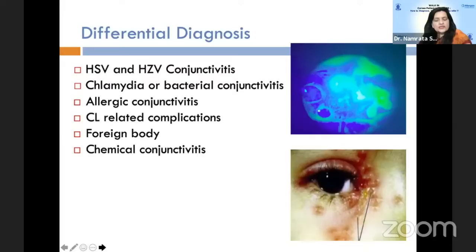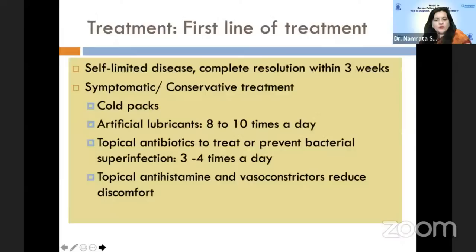Differential diagnosis includes HSV and HZV conjunctivitis, chlamydial or bacterial conjunctivitis, allergic conjunctivitis, chemical conjunctivitis, and contact lens-related or foreign body conditions. The disease is self-limited and resolution generally occurs within 3 weeks. For symptomatic cases, conservative treatment includes cold packs, artificial lubricants 8 to 10 times a day, and topical antibiotics 3 to 4 times a day to prevent or treat superadded bacterial infection. Topical antihistamines and vasoconstrictors can reduce discomfort.